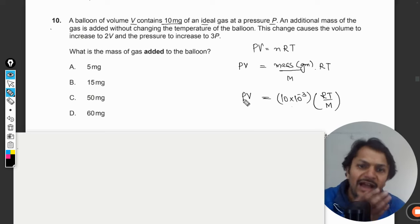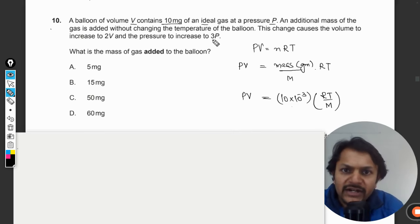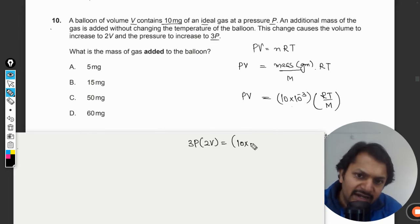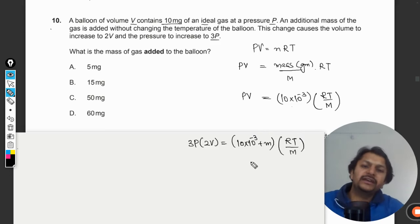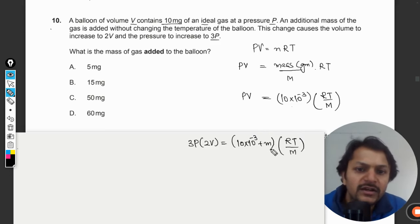Now what is happening? We have added some mass into it and the pressure becomes 3P. So our new equation will be 3P, and the volume is 2V, and some mass is added here, and this is RT divided by M. It is like that. And now we want to find this m.